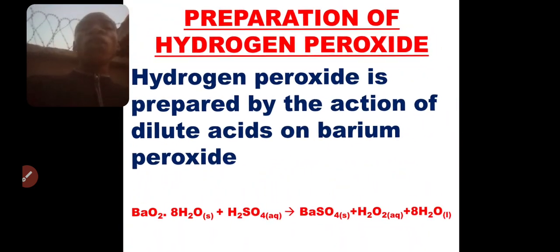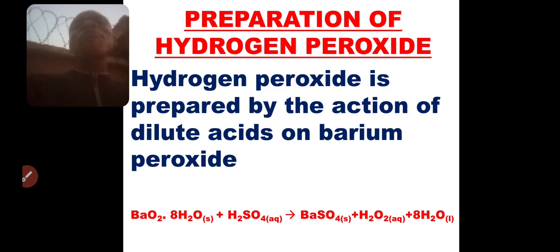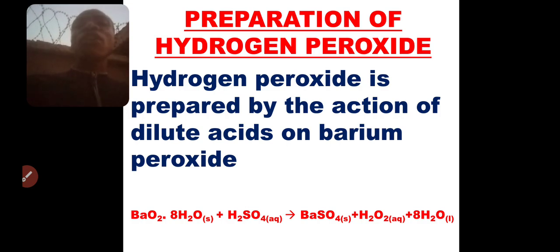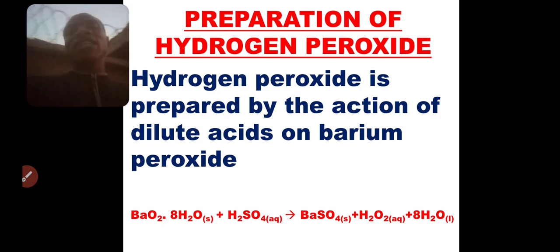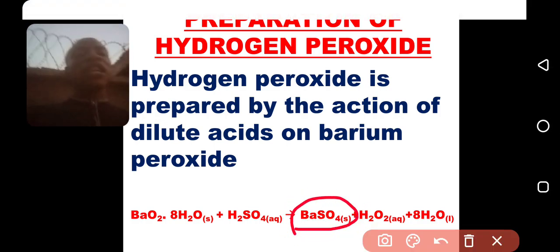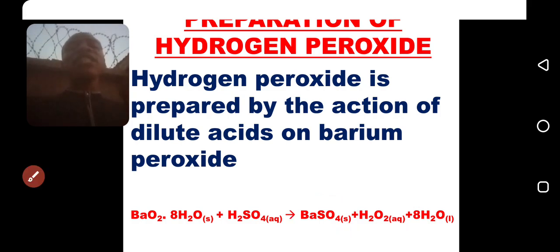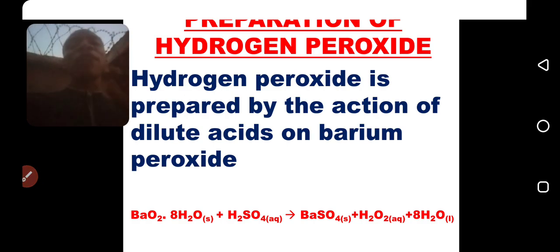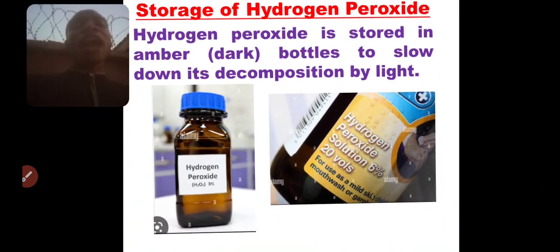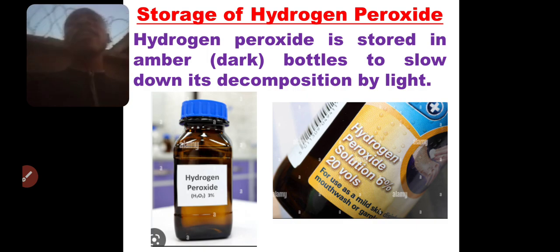You prepare hydrogen peroxide by the action of metallic peroxide on dilute acid. The most suitable peroxide we normally use is barium peroxide, because when it reacts with H2SO4 it forms an insoluble salt — barium sulfate — so there will be no problem separating the two compounds formed. Since barium sulfate forms as a precipitate it can easily be filtered off, leaving hydrogen peroxide as a liquid. That is why we choose barium peroxide in its dehydrated form as the metallic peroxide to prepare hydrogen peroxide in the laboratory.